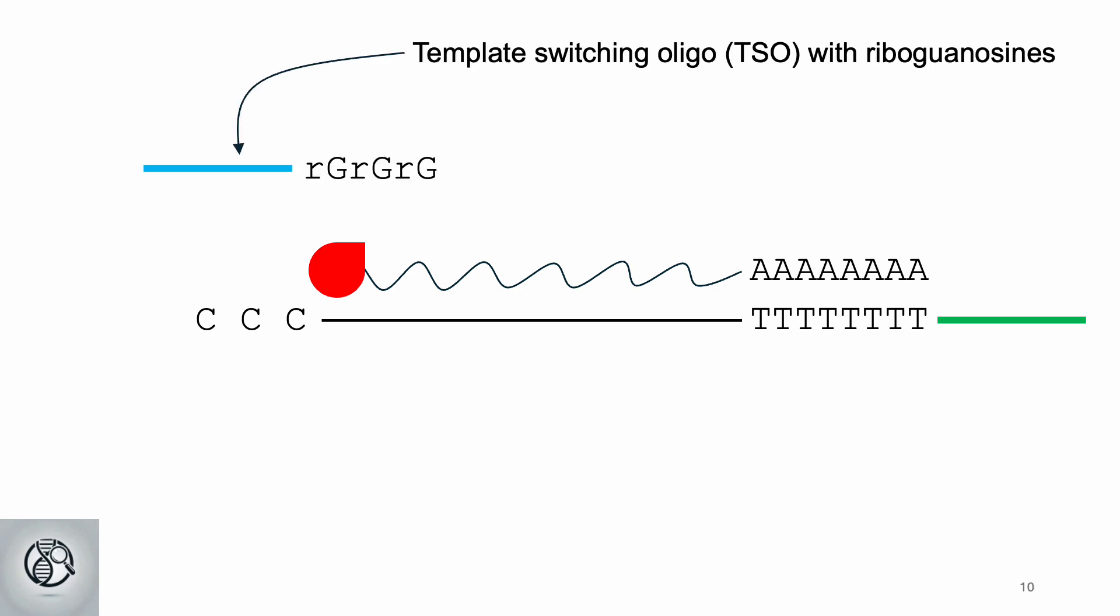We then add template switching oligos, or TSOs, which are short DNA sequences that enhance cDNA synthesis by allowing reverse transcriptase to extend beyond the mRNA template.